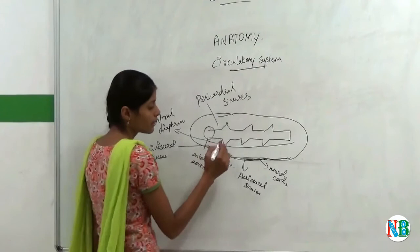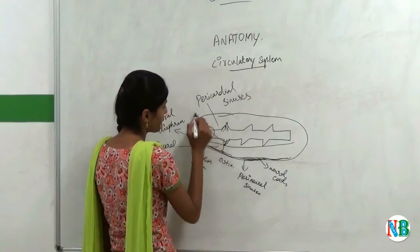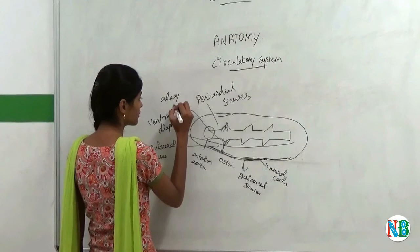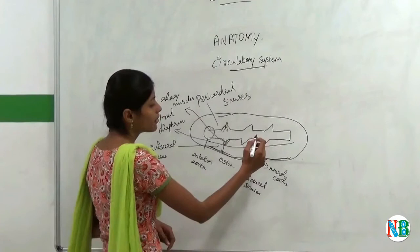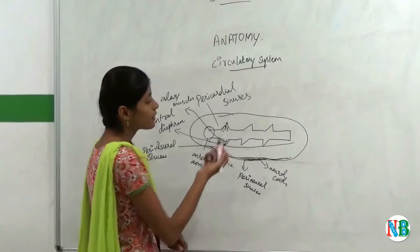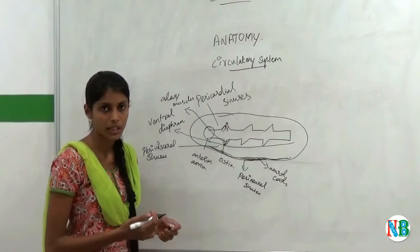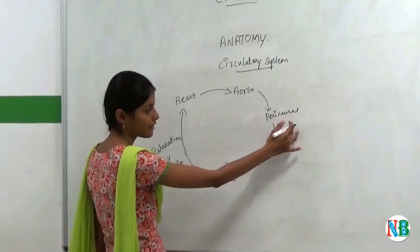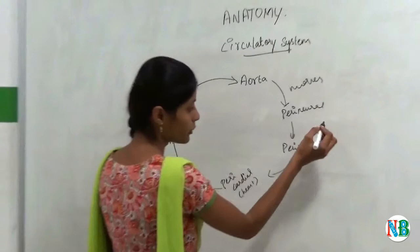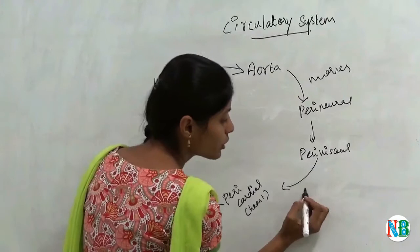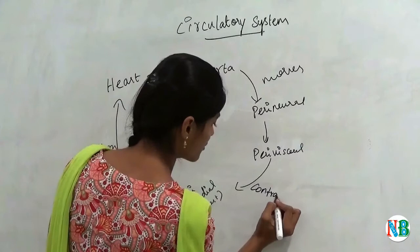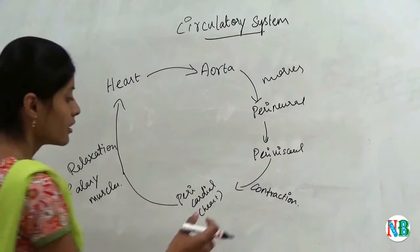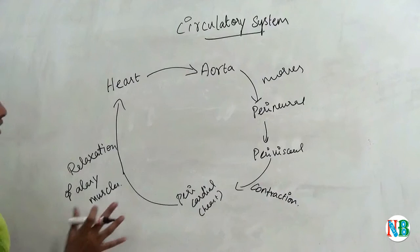These are the parts of cockroach's heart. And here will be some muscles. The heart lies in the mid-dorsal line of the cockroach and heart is a pumping organ. Now we will see the process of circulation. First, from the aorta, the blood moves to the perineural sinuses. From here, it moves into perivisceral sinuses. And then it again comes to perivisceral sinuses. Then through the contraction of alary muscles, the blood will go into the pericardium. When that muscle relaxes, then from pericardial sinuses, it again goes to heart.